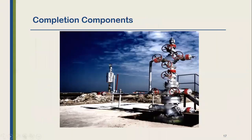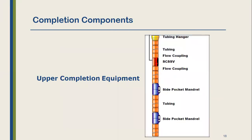Completion equipment is generally divided into upper completion equipment and lower completion equipment. Upper completion equipment includes a tubing hanger, tubing, and for natural flow or gas wells it may include a subsurface safety valve, side pocket mandrel for gas wells, and tubing side pocket mandrel for gas lift wells.